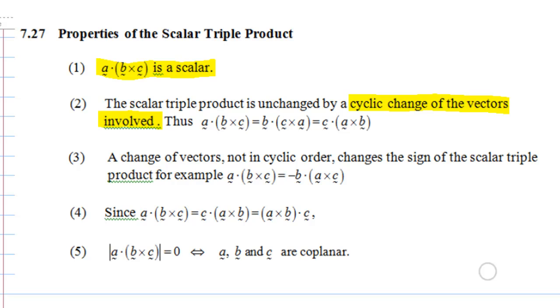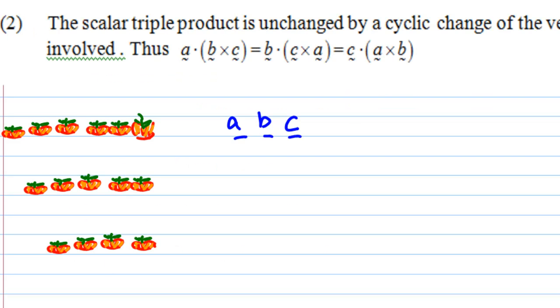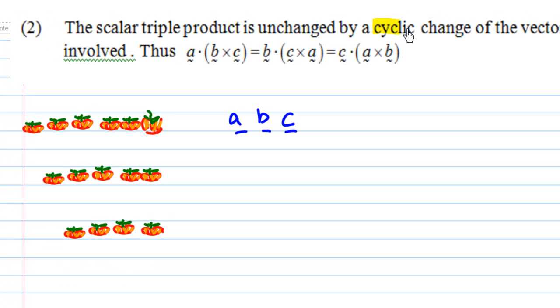Just imagine this. I'm going to explain to you a cyclic change of vector involved. I have vector A dot B cross C. I'm going to write A B C first. This A B C means A dot B cross C. Imagine that A B C are three person queueing up for three apples on the left. So there are three delicious apples on the left. But there's one condition. Everybody can take only one apple at one time. So A is in front. A take the apple,